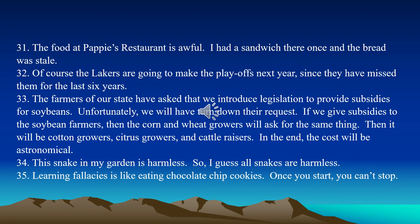Number thirty-three: The farmers in our state have asked that we introduce legislation to provide subsidies for soybeans. Unfortunately, we will have to turn down their request. If we give subsidies to the soybean farmers, then the corn and wheat growers will ask for the same thing, then it will be cotton and citrus and cattle, and in the end the costs will be astronomical. Let's not set foot on this slippery slope. Hopefully now slippery slope should be the most obvious fallacy because the pattern is very typically the same.